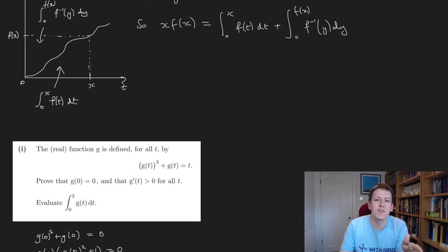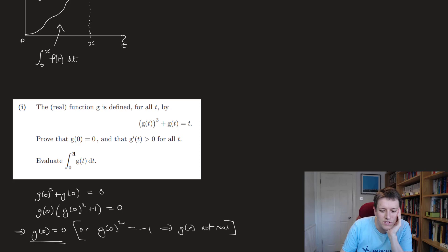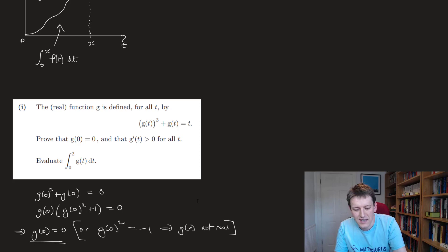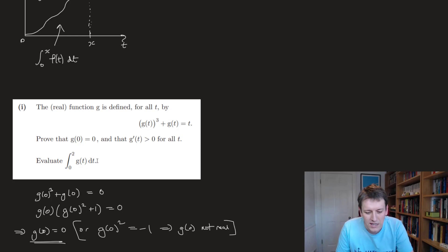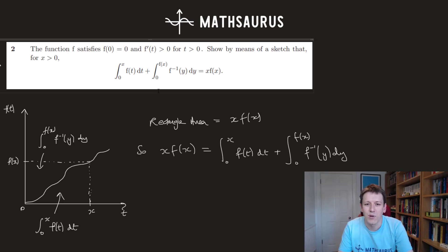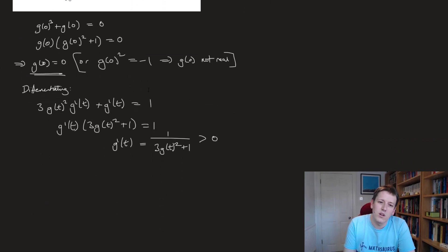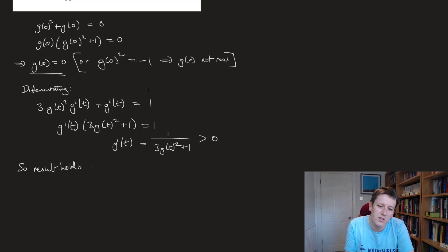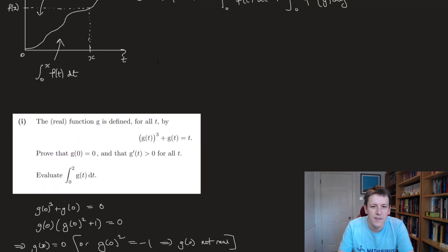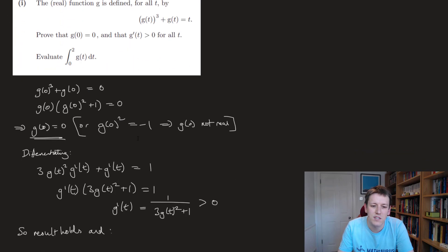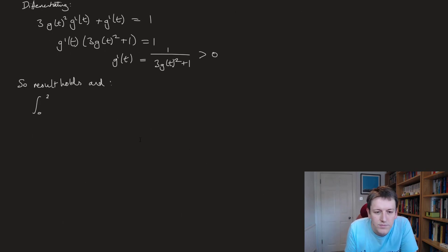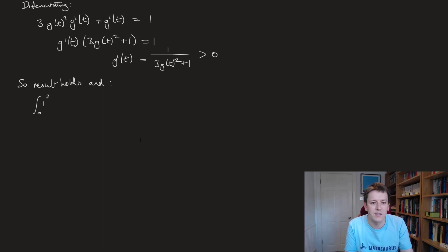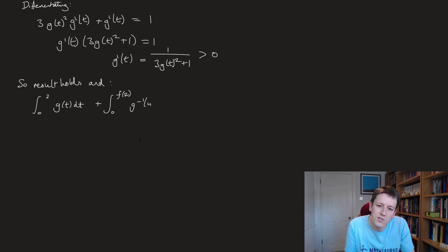We've shown the conditions for the first result hold, and we now want to evaluate the integral from 0 to 2 of g(t) dt. This is really where we take that hint. Even though we're asked for this integral, I'm going to think about working out the other integral and rearranging. Applying the result with x=2: the integral from 0 to 2 of g(t) dt, plus the integral from 0 to g(2) of g⁻¹(y) dy, equals 2 times g(2).